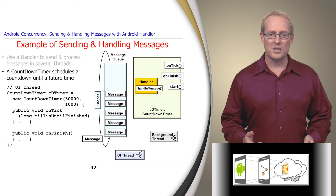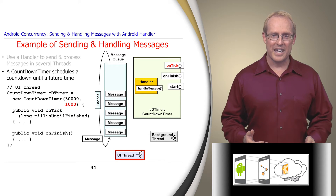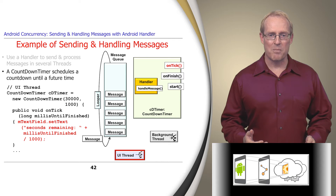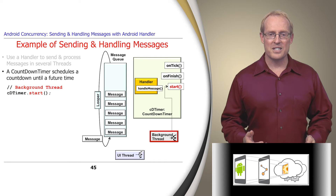The code on this slide creates a 30,000 millisecond (30 second) countdown timer in the user interface thread. Its onTick hook method is dispatched via an internal callback to the handleMessage hook method every 1,000 milliseconds (one second), at which point the number of seconds remaining is written into a text field. When the 30 second period elapses, the onFinish hook method is dispatched, writing 'done' into the text field. A background thread calls start on the countdown timer, which sends a message that triggers this processing.